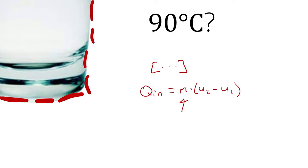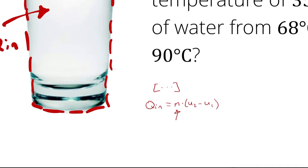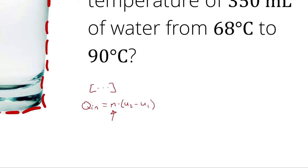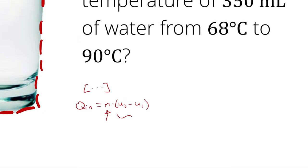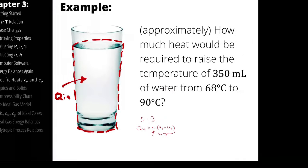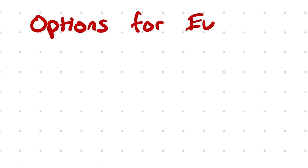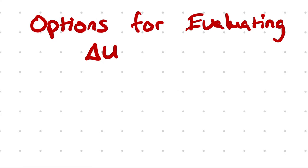The mass we could determine because we know the volume and we can look up the density of water at 68 or 90 degrees Celsius. So the question really becomes: how do we determine delta U? For that, we have a couple of different options. I'm going to call this 'options for evaluating delta U and delta H.'